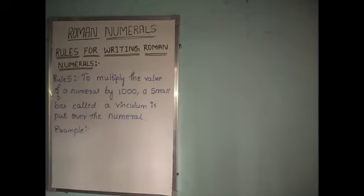Let's learn the 5th rule. To multiply the value of a numeral by 1000, a small bar called a vinculum is put over the numeral.